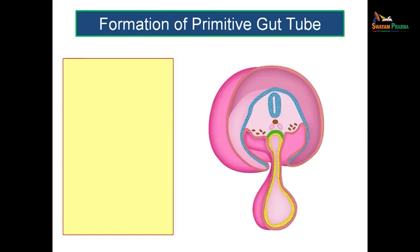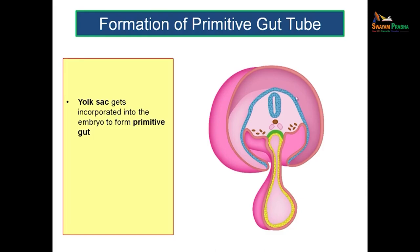First we will see the formation of the primitive gut tube. This is actually a coronal section where you can see the amniotic cavity in the upper aspect and the yolk sac in the lower aspect. In the upper aspect we have the ectoderm, and in the lower aspect you have the endoderm. This yolk sac is going to get incorporated into the embryonic disc to form the primitive gut. We have a large amniotic cavity in the upper part and a small yolk sac cavity in the lower part.